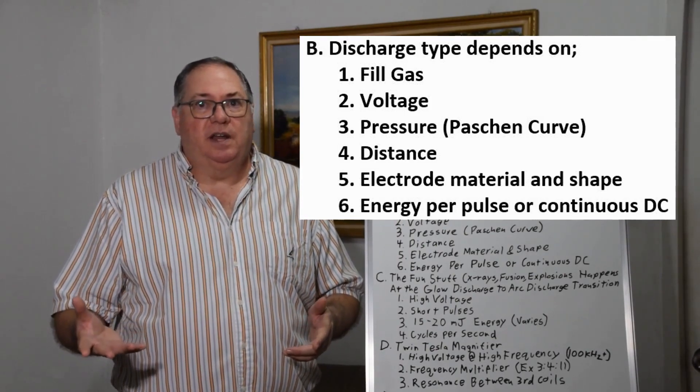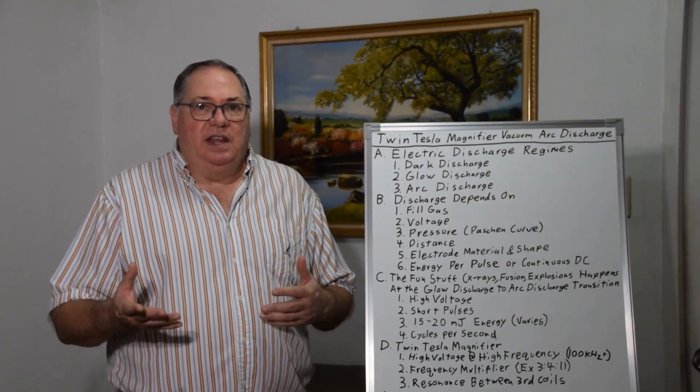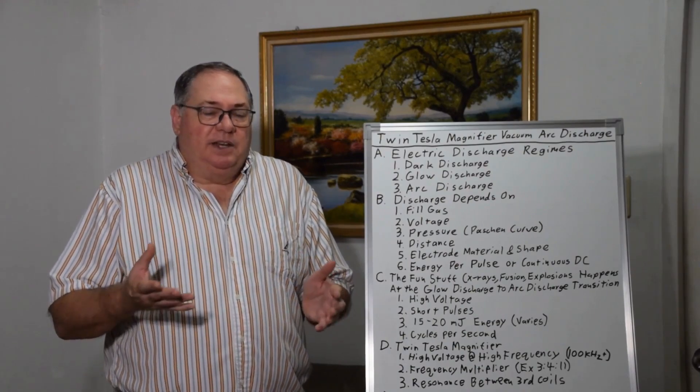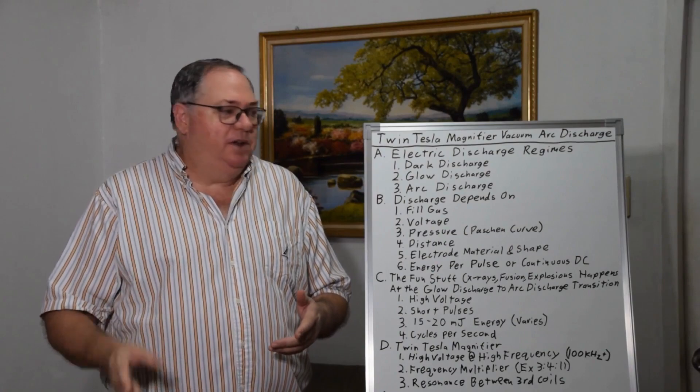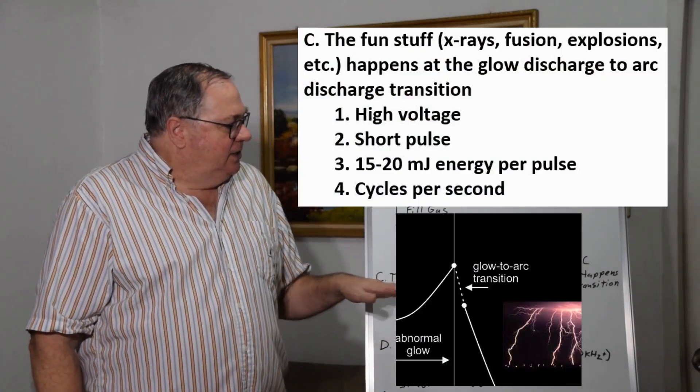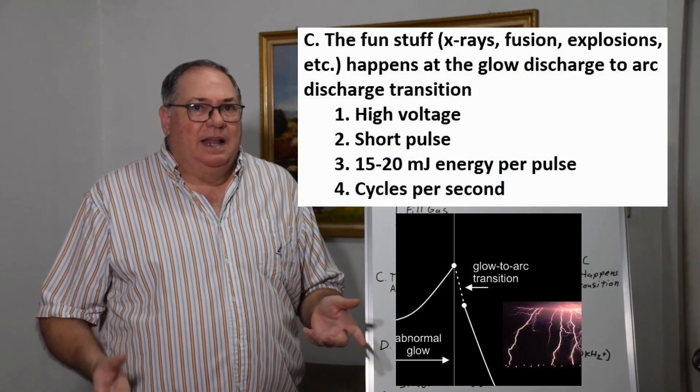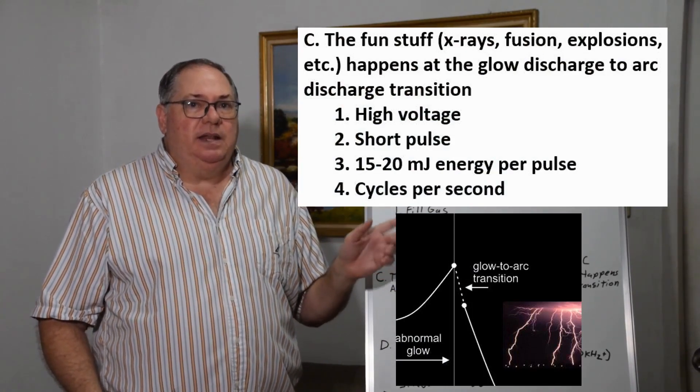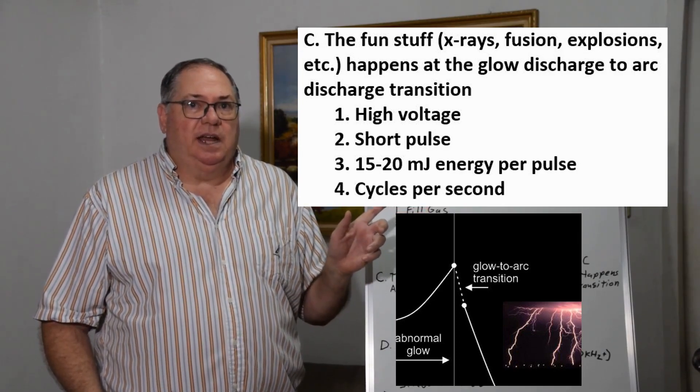Running continuous DC generally requires the most energy. If you're trying to get high efficiency in terms of light output, running in pulses will do that. The fun stuff happens at the transition between glow discharge and arc discharge, because that's when voltage is highest.